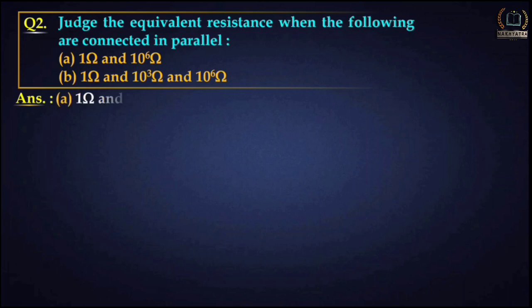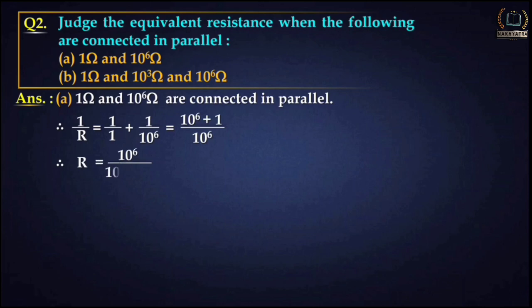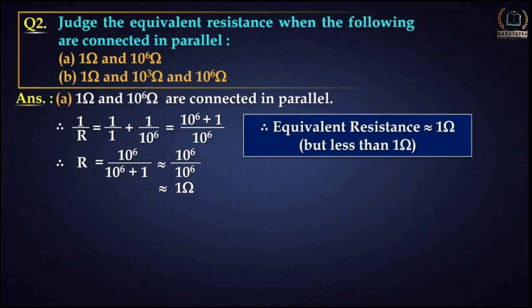For part a, 1 ohm and 10⁶ ohm are connected in parallel. The formula gives 1/R = 1/1 + 1/10⁶. After solving, R equals 10⁶ / (10⁶ + 1), which is approximately 10⁶ / 10⁶, that is 1 ohm. The equivalent resistance is approximately 1 ohm, but it is slightly less than 1 ohm.